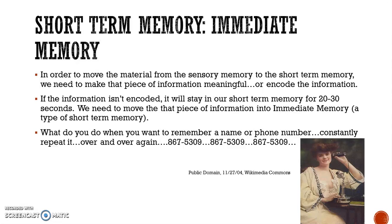If the information isn't encoded, it will stay in your short-term memory for about 20 to 30 seconds. So you need to move that piece of information into the immediate memory, which is a type of short-term memory. How do you do that? Well, like for a phone number or a name, you're constantly repeating it — like 8-6-7-5-3-0-9. That would be a good lyric for a song.